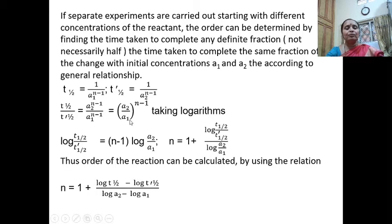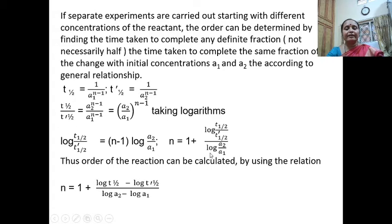This will also be equal to (a2 / a1) to the power of n minus 1. Next, taking the logarithms of the equation, it reduces to: log(T-half / T'-half) = (n − 1) × log(a2 / a1). On simplification, n = 1 + log(T-half / T'-half) / log(a2 / a1). By using this relation, we can determine the order of a reaction.